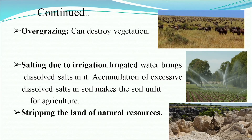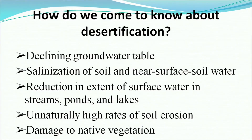Salting due to irrigation: irrigated water brings dissolved salts, and accumulation of excessive dissolved salts makes soil unfit for agriculture. Stripping the land of natural resources through excessive mining also damages the soil. Indicators of desertification include declining groundwater table, salination of soil and near-surface water, reduction in surface water in streams, ponds and lakes, unnaturally high rates of soil erosion, and damage to native vegetation.